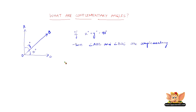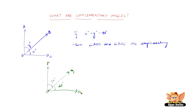So let us take an example. Say we have an angle which is 40 degrees, and then we add another angle which comes up to 50 degrees. Let us name them F, O, G and G, O, H. We can say that angle F, O, G and G, O, H are complementary.